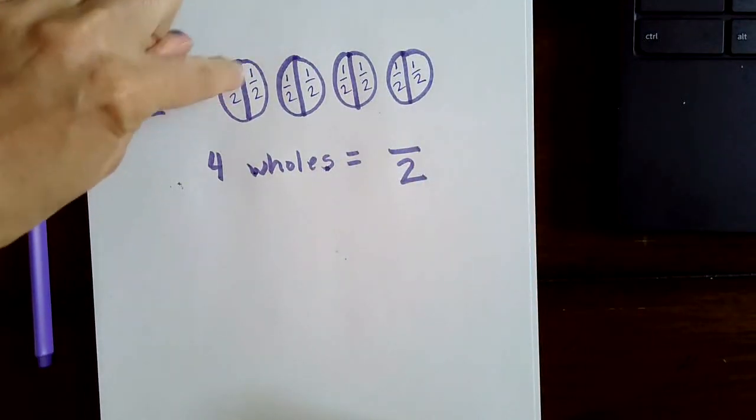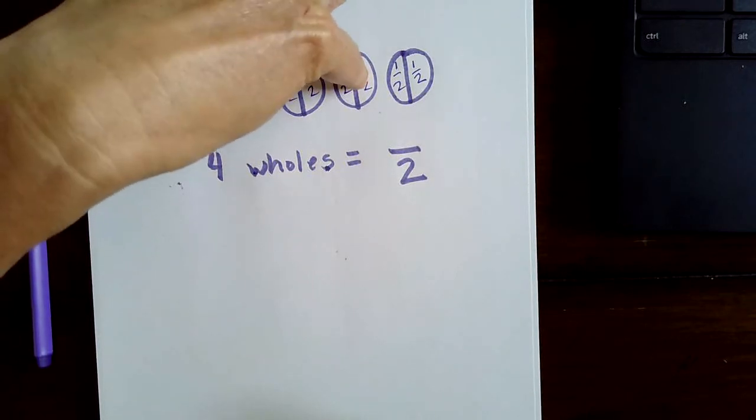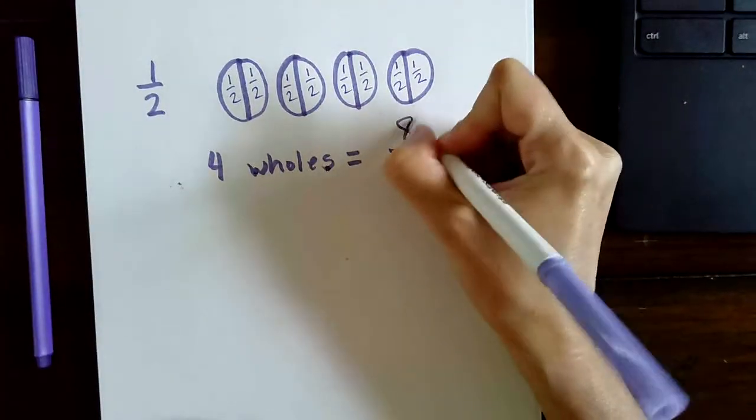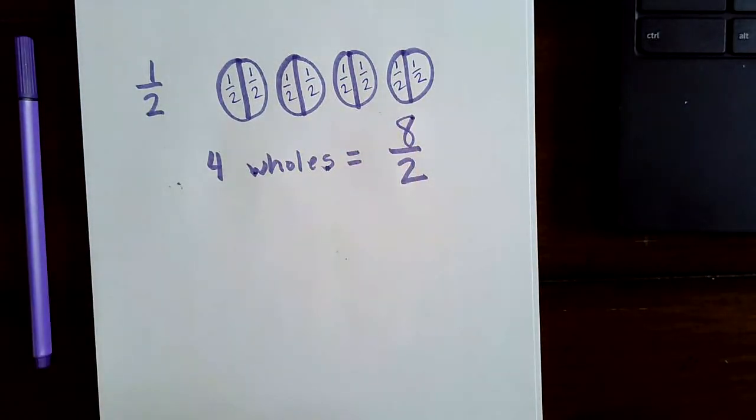So go ahead and write what you think the numerator is. And let's count it up. One half, two halves, three halves, four halves, five halves, six halves, seven halves, eight halves. So four wholes is equal to eight halves.